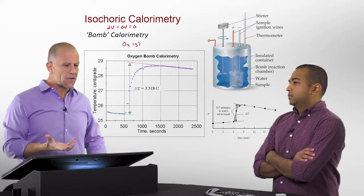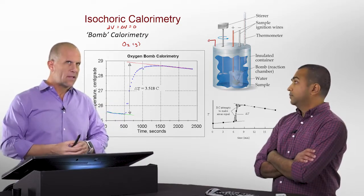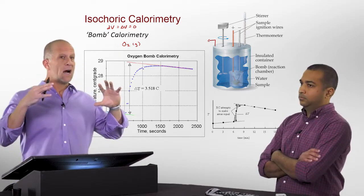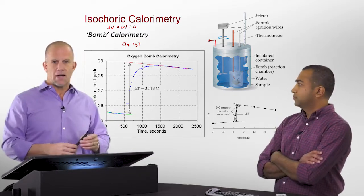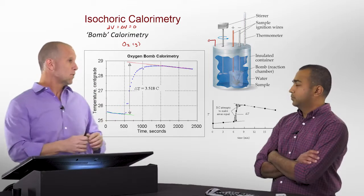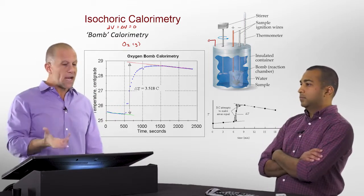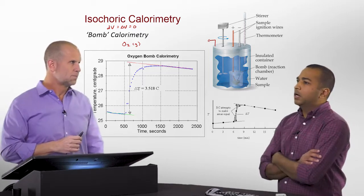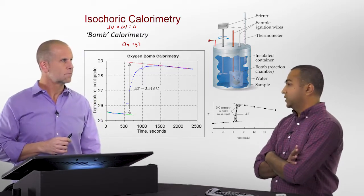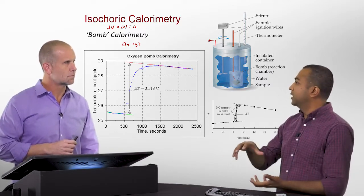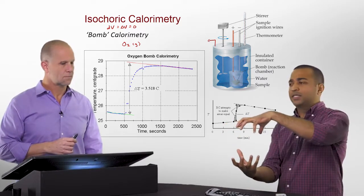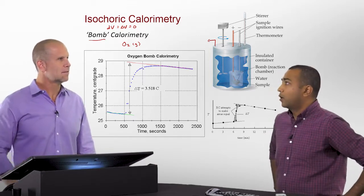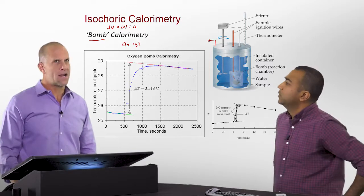Bomb calorimetry is very common in universities, food industry labs, or anywhere you want to know the enthalpy of formation of anything that would combust — any organic material. We have several of these at ASU, used in the physical chemistry lab where third and fourth year chemistry students take this class. We have about three bomb calorimeters set up. There's really only one main company — PAR — that makes most of them. They also do a lot of hydrothermal work.